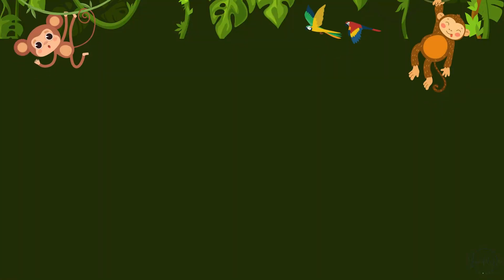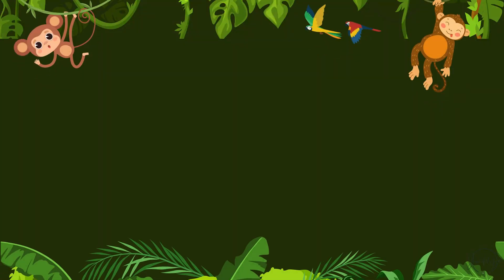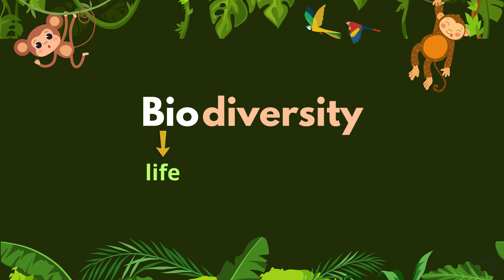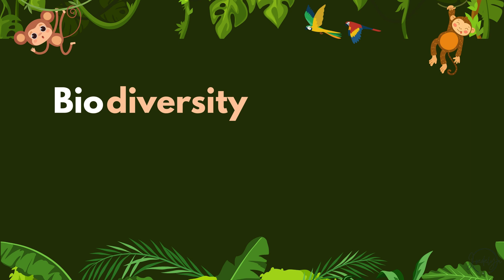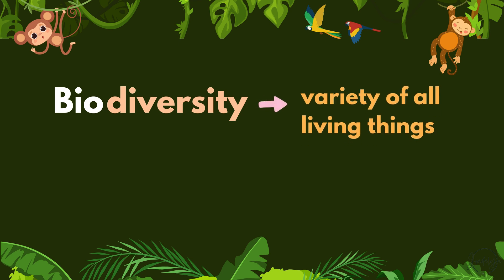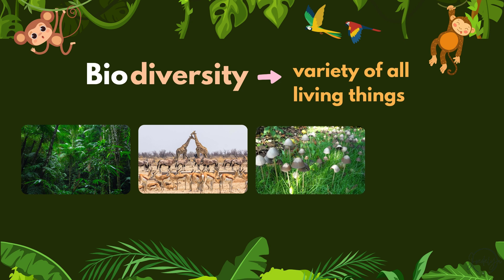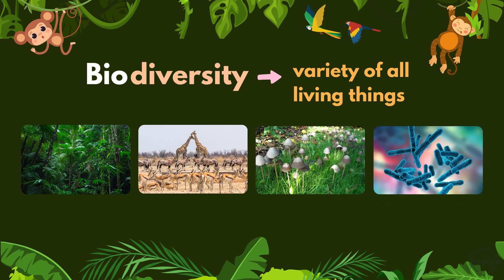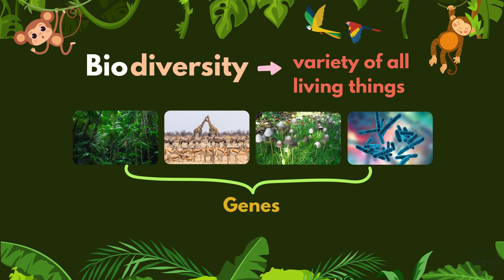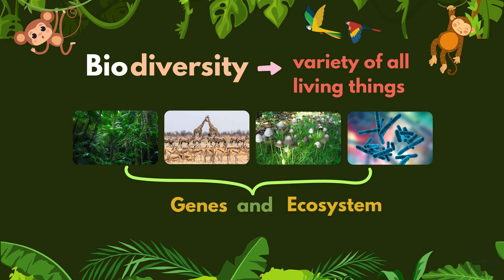It comes from two words: bio, meaning life, and diversity, meaning variety. Biodiversity is the variety of all living things — plants, animals, fungi, and even microorganisms like bacteria — plus the genes they carry and the ecosystems they form.